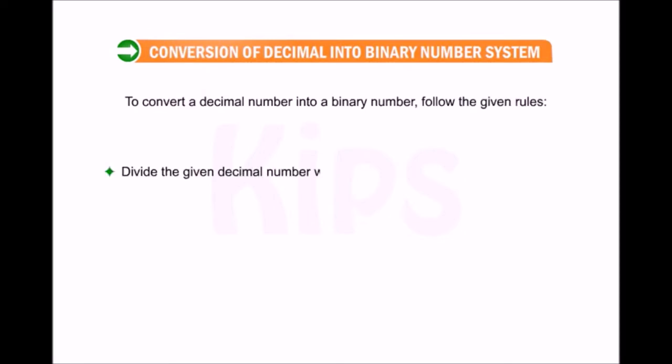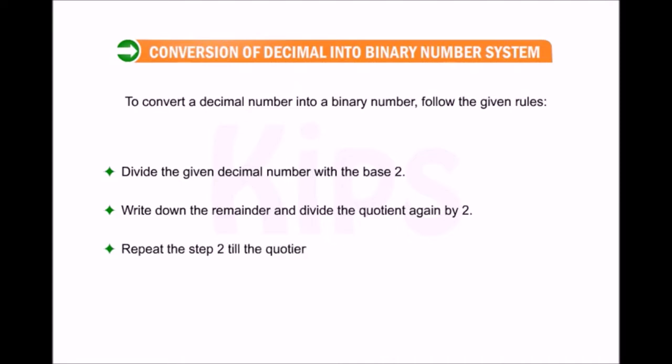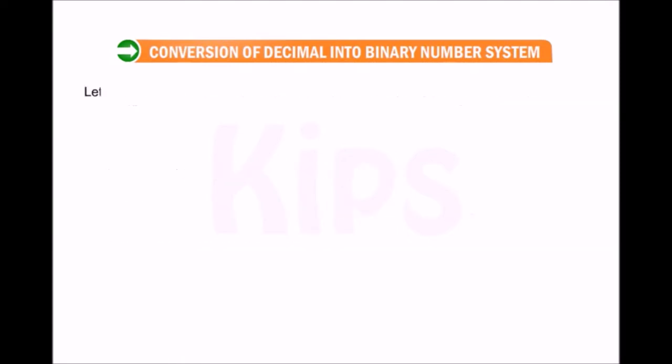...the given decimal number with the base 2, write down the remainder, and divide the quotient again by 2. Repeat step 2 until the quotient is 0. Let us understand the conversion of decimal number into binary number with the given examples.